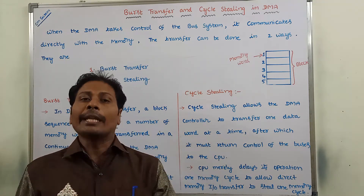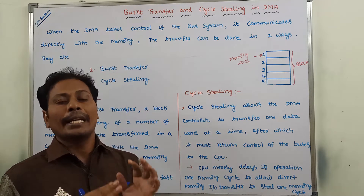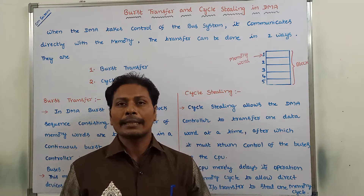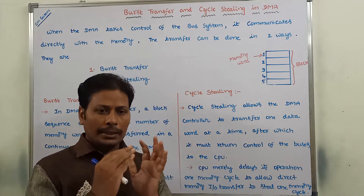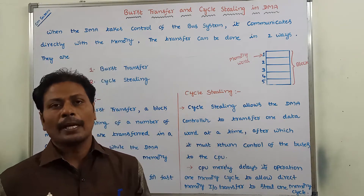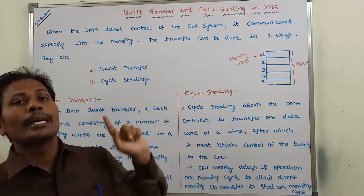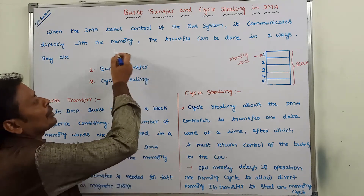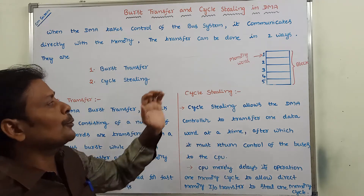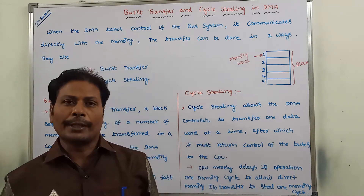The IO peripheral device receives the DMA acknowledgement, then it transfers the data to the main memory by using the DMA controller. This type of transfer can be done in two ways: the first one is burst transfer and the second one is cycle stealing.